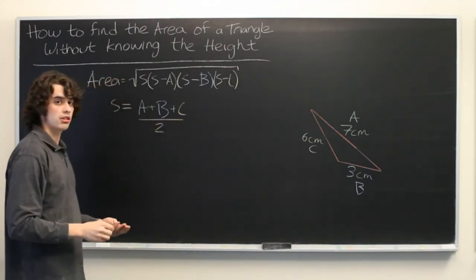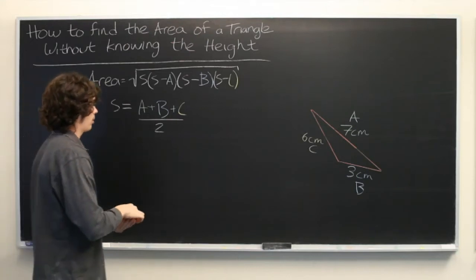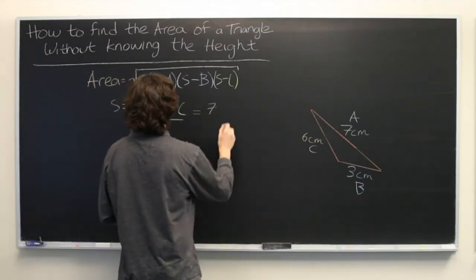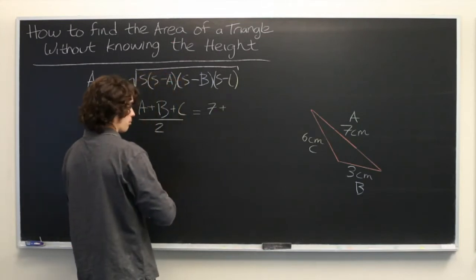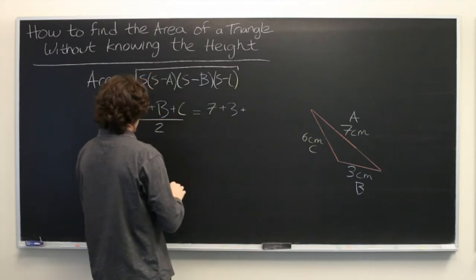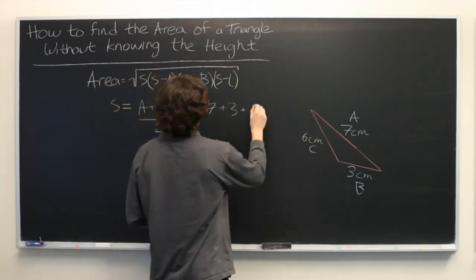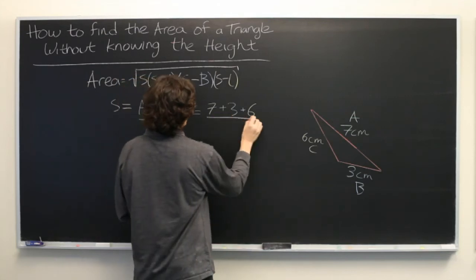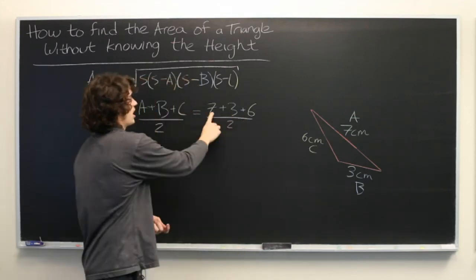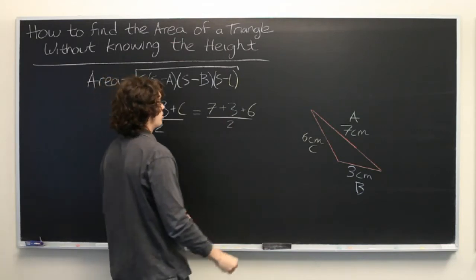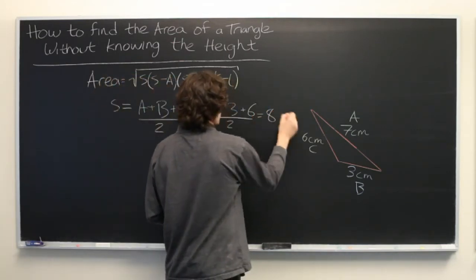So let's plug in these numbers and see what we get. We have A equals 7 plus B equals 3 plus C equals 6, all over 2. 7 plus 3 is 10, 10 plus 6 is 16, 16 divided by 2 is 8. So that's S.